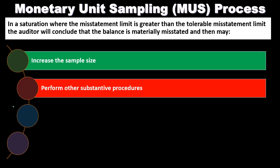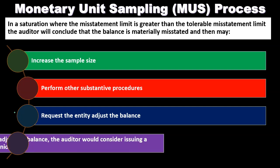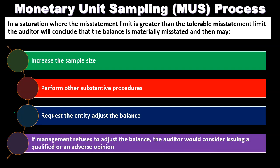The auditor can also perform other substantive procedures to test whether the balance is correct. If both additional testing and increased sample size still indicate misstatement, the auditor requests that the entity adjust the balance so it is properly stated and can be reported correctly in the audit opinion.